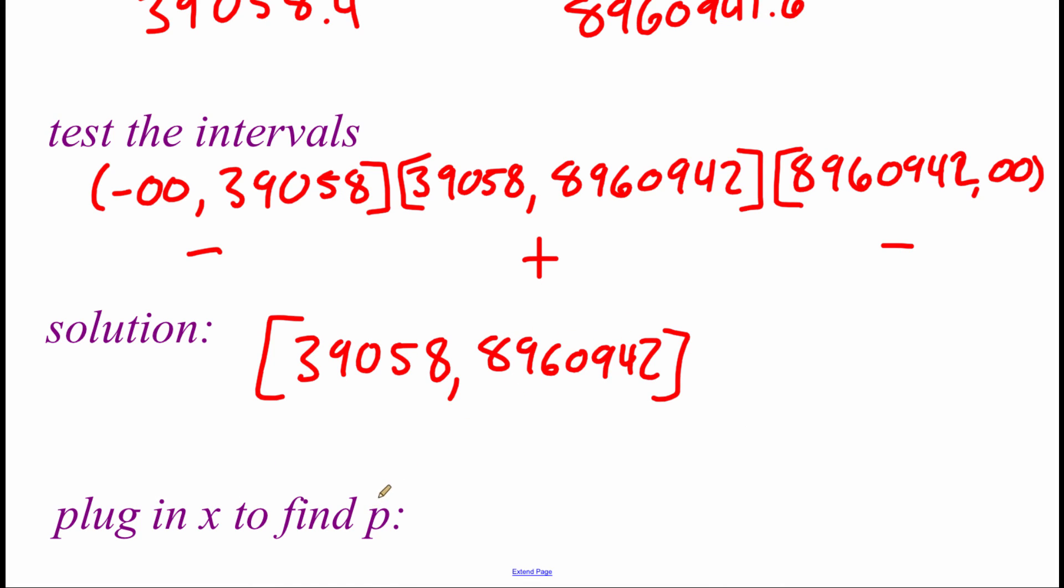And now what we want to do is we want to plug in each one of these end x values to help us find possible p values or prices for our calculator. Remember our price equation from earlier was that p equals 100 minus 0.00001 x. And I would store key each one of these x values. So if we plug in this 39,058, we end up with a price of $99.61.